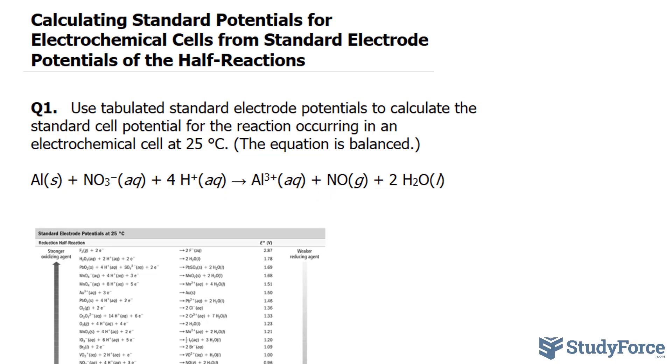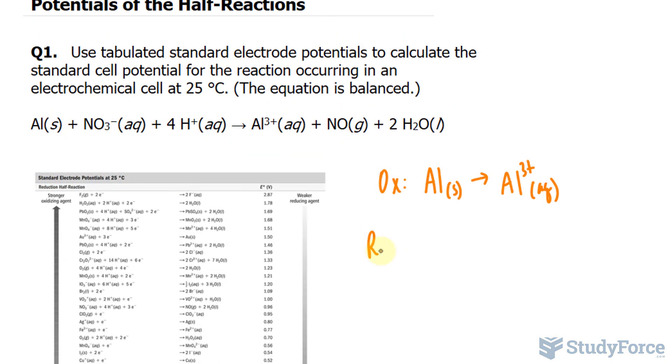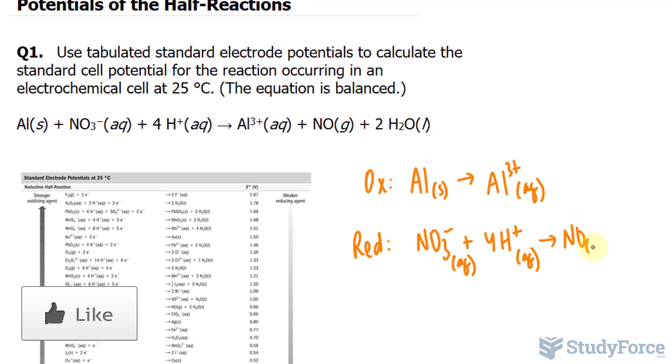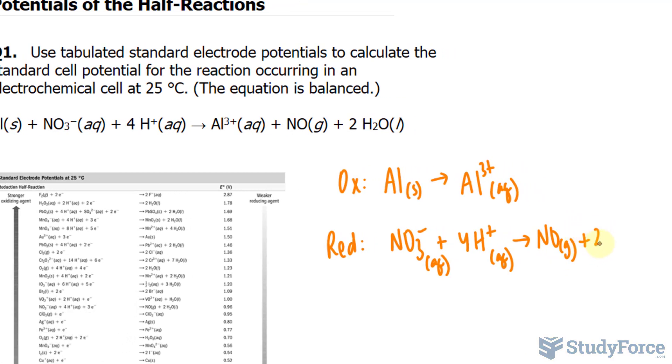So let's write this down for clarity and for reference sake. We have the oxidation, aluminum solid, yielding aluminum three plus. And we'll balance the charges in a moment. And the reduction reaction, looking like this, where we have NO3 minus plus 4H plus, both of these are aqueous, yielding NO gas plus 2H2O liquid.